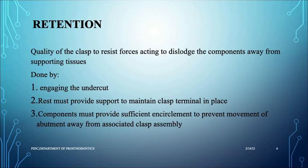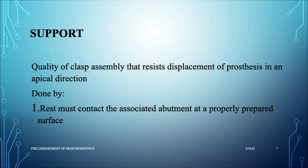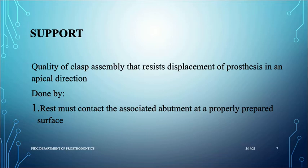The rest must provide support to maintain the clasp terminal in place, and components must provide sufficient encirclement to prevent movement of the abutment away from the clasp assembly. Support is the opposite of retention — it resists displacement of the prosthesis towards the tissue surface in the apical direction, preventing the denture from pressing onto the tissue surface under occlusal forces.